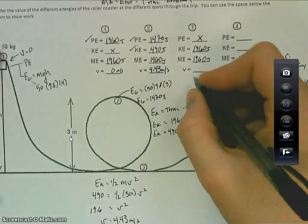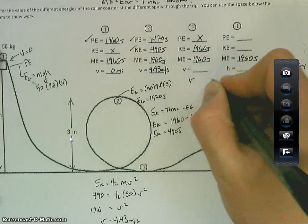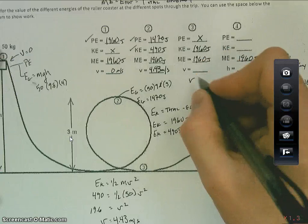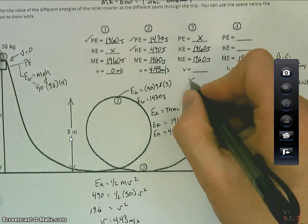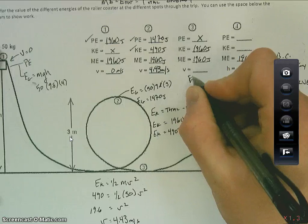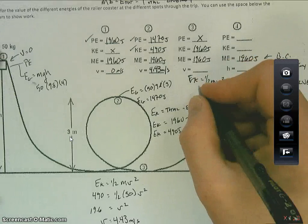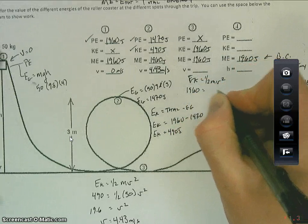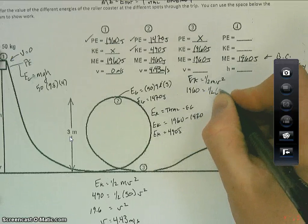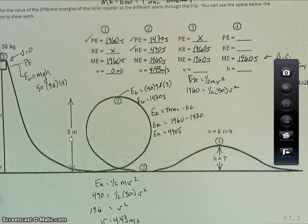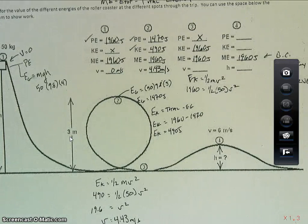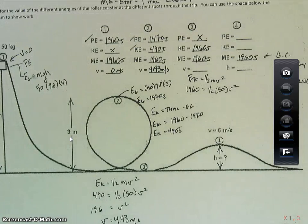And if I want to know the velocity then all I have to do is say the velocity here is related to the EK, the EK equation. So EK is one half mv squared. We know EK is 1960, one half times the mass 50 velocity squared. And again this just becomes an algebra problem at that point. So 1960 divided by 50, divided by a half, and then the square root of that gives us 8.85, which is your velocity.